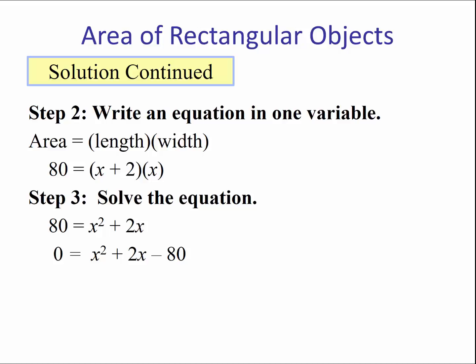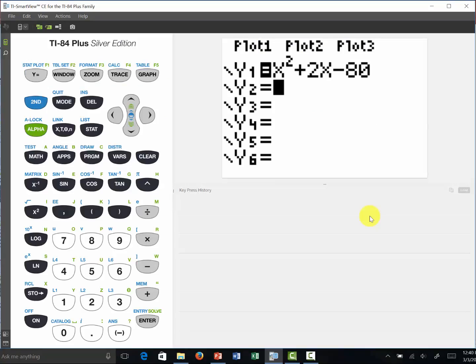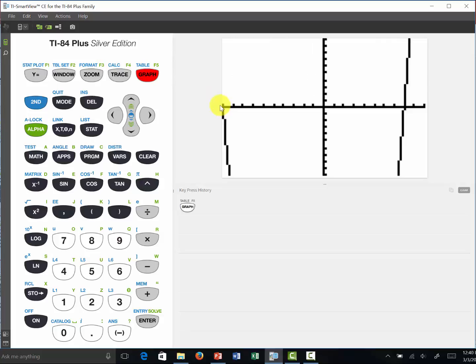But for this video we can use the graphing calculator to help us identify where this quadratic equation crosses the x-axis. We have our equation in y1. Let's graph it. Here we can see an x-intercept that looks like negative 10 and another x-intercept that looks like about 8.